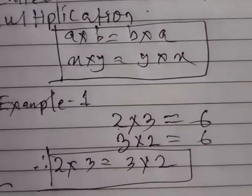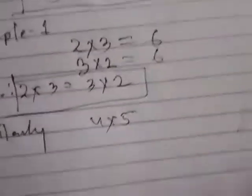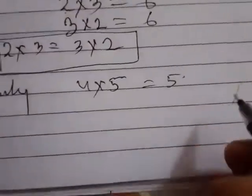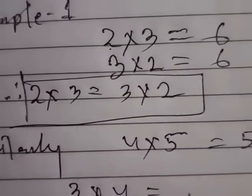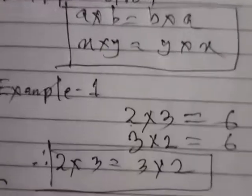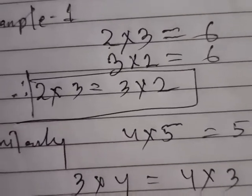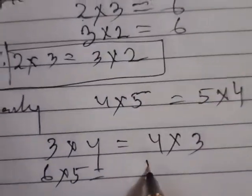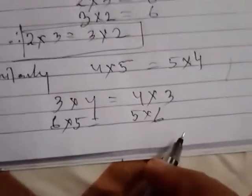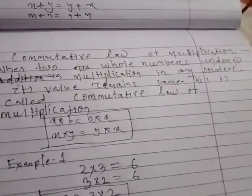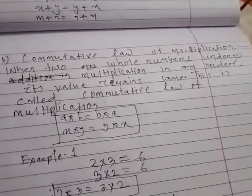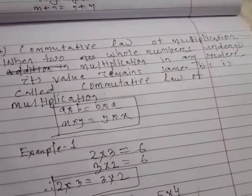Similarly, 4 times 5 is equal to 5 times 4, both equal 20. And 6 times 5 equals 30, and 5 times 6 equals 30. So multiplication is always commutative. When two whole numbers undergo multiplication in any order, their value remains the same — this is the commutative law of multiplication.